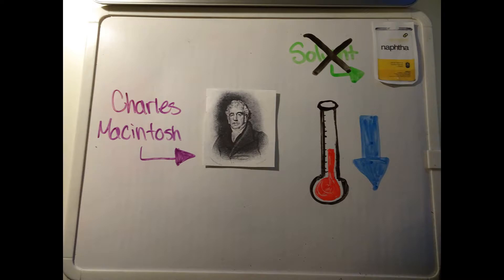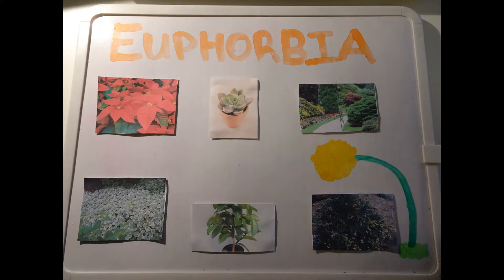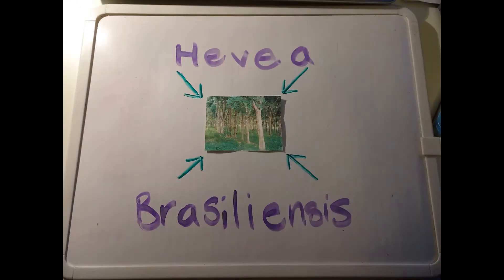There are many trees and plants that are responsible for the supply of latex that goes on to create rubber. Most of them belong to the Euphorbia family, which include poinsettias, some succulents, deciduous and evergreen shrubberies, snow on the mountain, ficus elastica, parthenium argentatum, and even dandelions produce latex, even though they are not Euphorbia. However, the best supplier is Hevea brasiliensis, which is a tree native to Brazil.